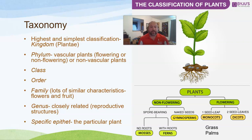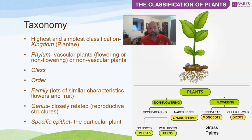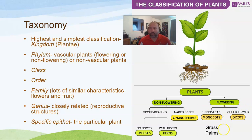Then we've got the phylum, which for plants breaks down into vascular or non-vascular plants. Then we have class and order, getting more specific. For vascular plants we separate into flowering and non-flowering. Non-flowering are your gymnosperms — typically conifers with a naked seed. Flowering plants are angiosperms, which are either monocots or dicots. Dicots have two seed leaves; monocots have one. Grasses and palms fall into the monocot category.